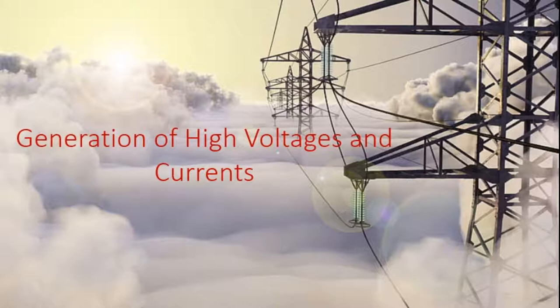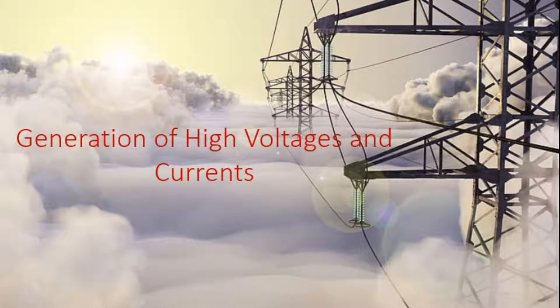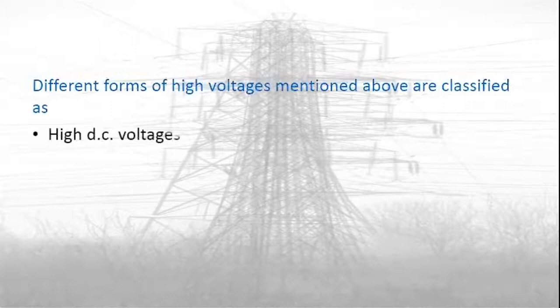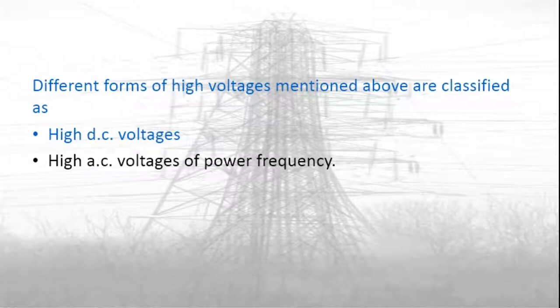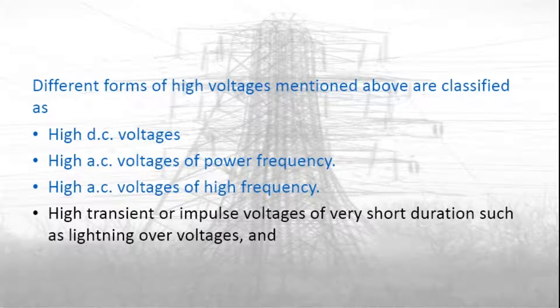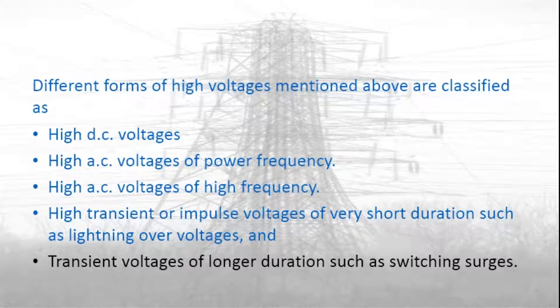High impulse voltages are required for testing to simulate overvoltages that occur in power systems due to lightning and switching surges. These are the major purposes of generating very high voltages in the laboratory for testing. The classifications include high DC voltages, high AC voltages of power frequency, high AC voltages of high frequency, high transient or impulse voltages of very short duration such as lightning voltages, and testing transient overvoltages of long durations such as switching surges.